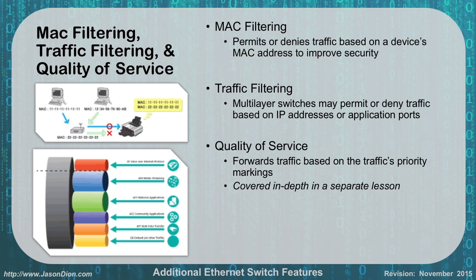Another feature is traffic filtering, done with multilayer switches, where you can permit or deny traffic based on IP addresses or port applications — much like a firewall would do. This is done using an access control list, or ACL, where you allow or deny traffic based on IP or port. We can also configure quality of service, where the switch makes forwarding decisions based on traffic priority. For example, streaming media like YouTube is lower priority than web traffic, while VoIP calls are the highest priority because you don't want stuttering or jitter in phone calls. QoS is a big topic with its own dedicated module.